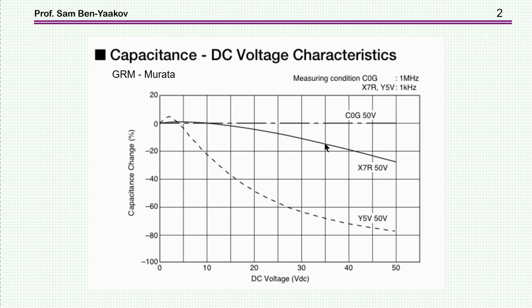Some capacitors or some dielectric materials are pretty stable as far as the voltage dependence, like COG. But some, like Y5V, that's just an example, there are many others, are highly dependent on the voltage across them.